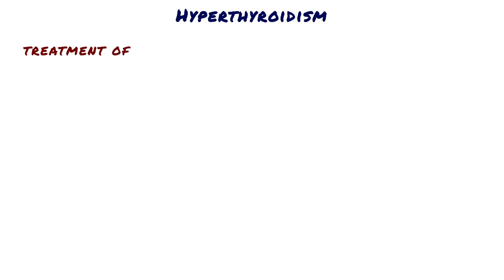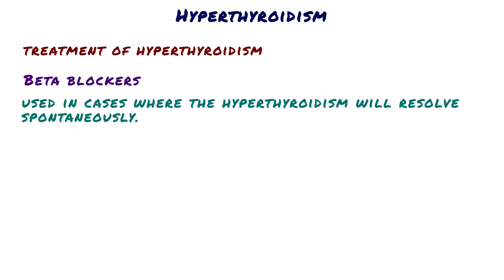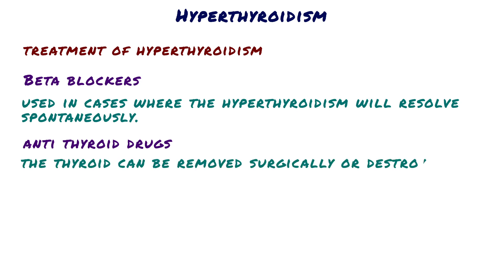How can we treat hyperthyroidism? Beta blockers can be used for symptomatic relief of tachycardia, and are typically used in cases where the hyperthyroidism will resolve spontaneously. In cases of thyroid hormone hypersecretion, the treatment goal is to reduce the amount of circulating thyroid hormone, so antithyroid drugs are used to decrease thyroid hormone synthesis. In most cases, more definitive treatment is preferable to long-term treatment with antithyroid drugs. The thyroid can be removed surgically or destroyed by radioactive iodine, though either of these treatments can lead to hypothyroidism.